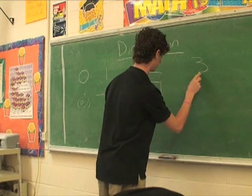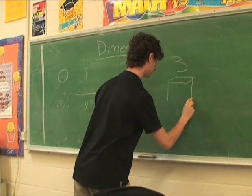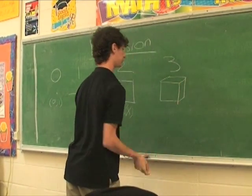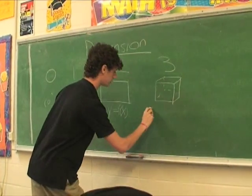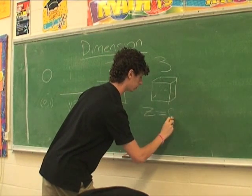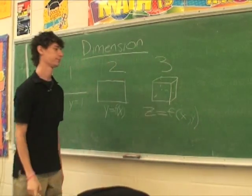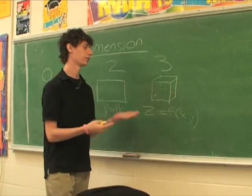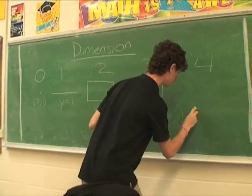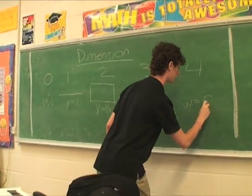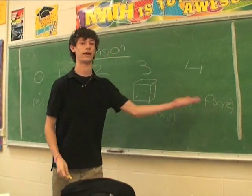Three dimensions, moving further, would be like a cube — there's a dashed line in back which we can't see. This is done with z equals a function of x and y, a three-variable function. Four dimensions, although we don't know what that's going to look like conceptually, should be w — or some other letter — equals a function of x, y, and z. That's four variables.